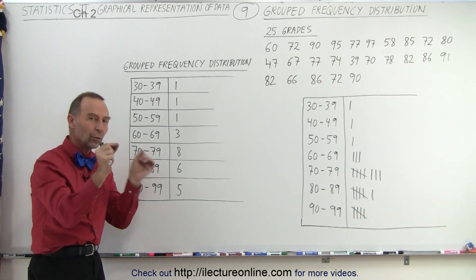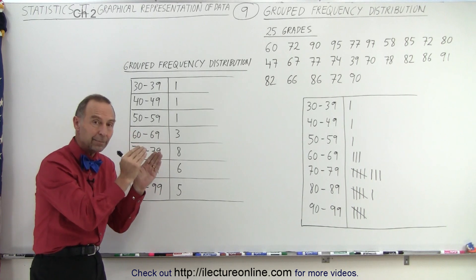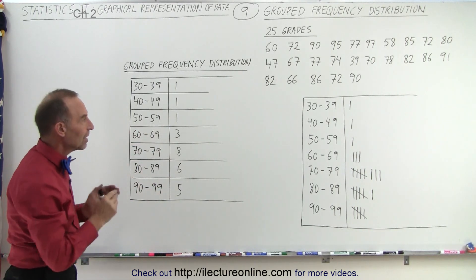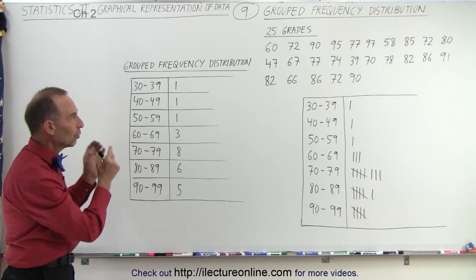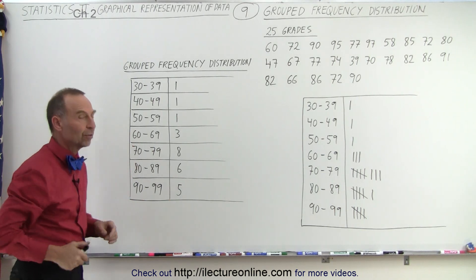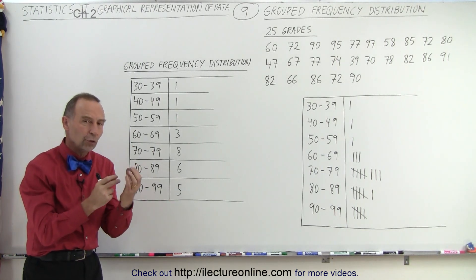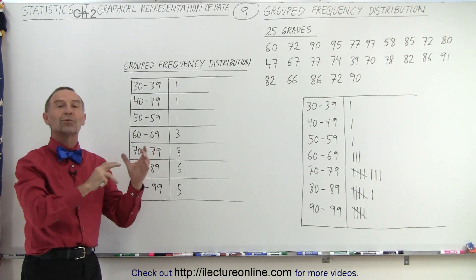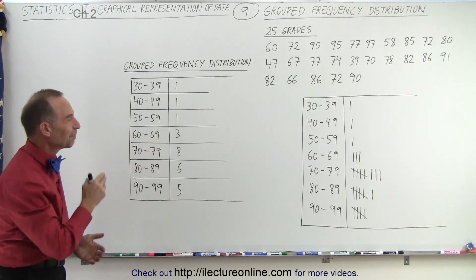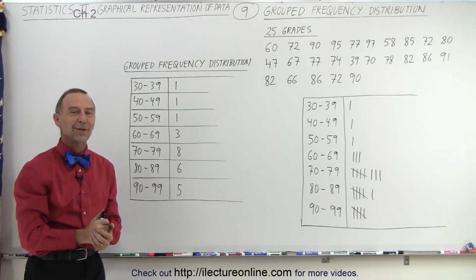In non-grouped, we have a one-to-one correspondence between a data type and a frequency. Here we have to group a bunch of data together into a single group, and then see what the frequency of the distribution is of those groups. Alright, that is the difference between the two.